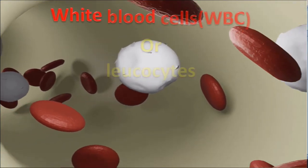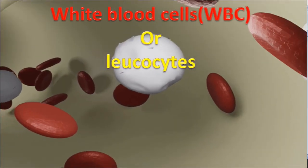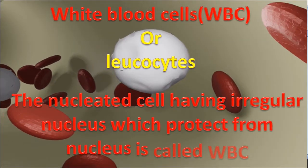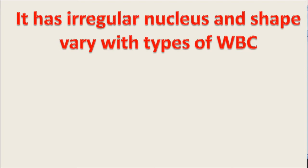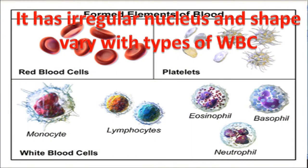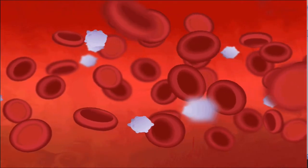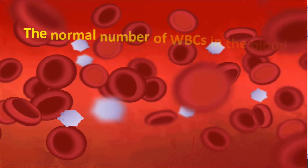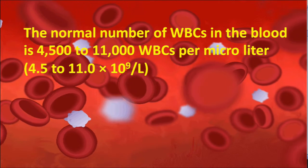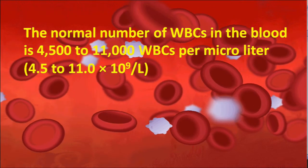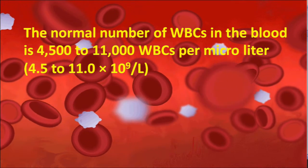White blood cells, or leukocytes, are nucleated cells having an irregular nucleus which protect the body from diseases. They have an irregular nucleus and their shape varies with the type of WBC. According to the shape of the nucleus, they are divided into monocyte, lymphocyte, eosinophil, basophil, and neutrophils. The normal number of WBC in the blood is 4,500 to 11,000 WBC per microlitre.